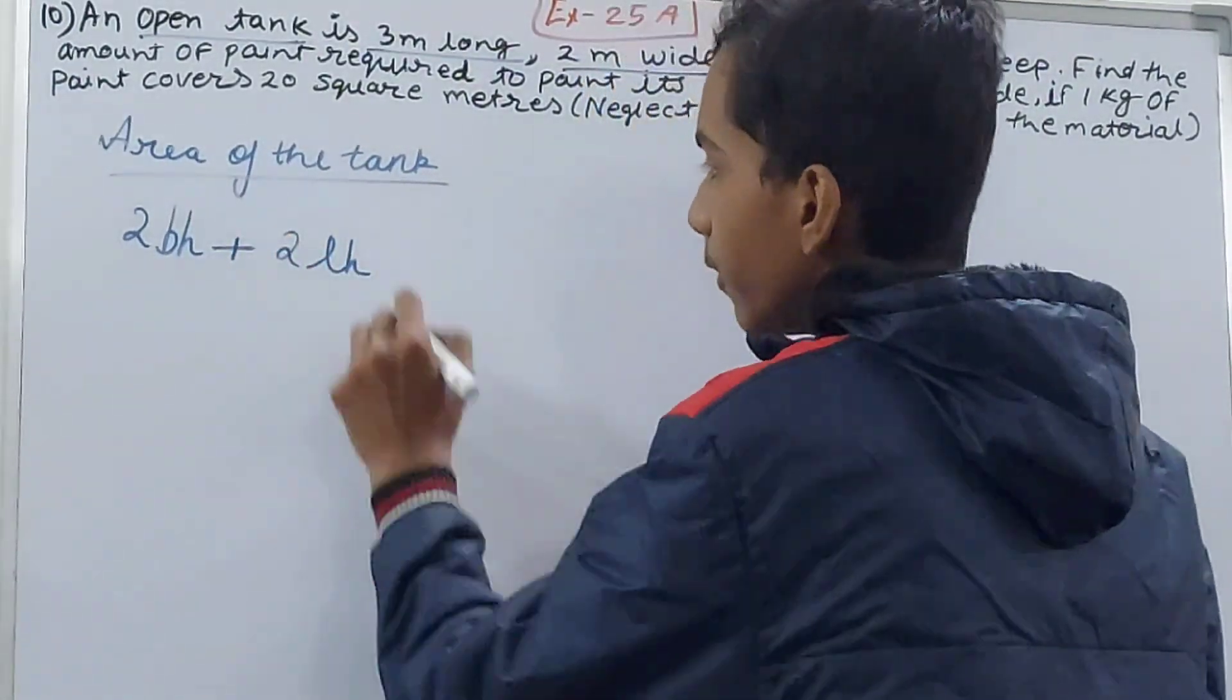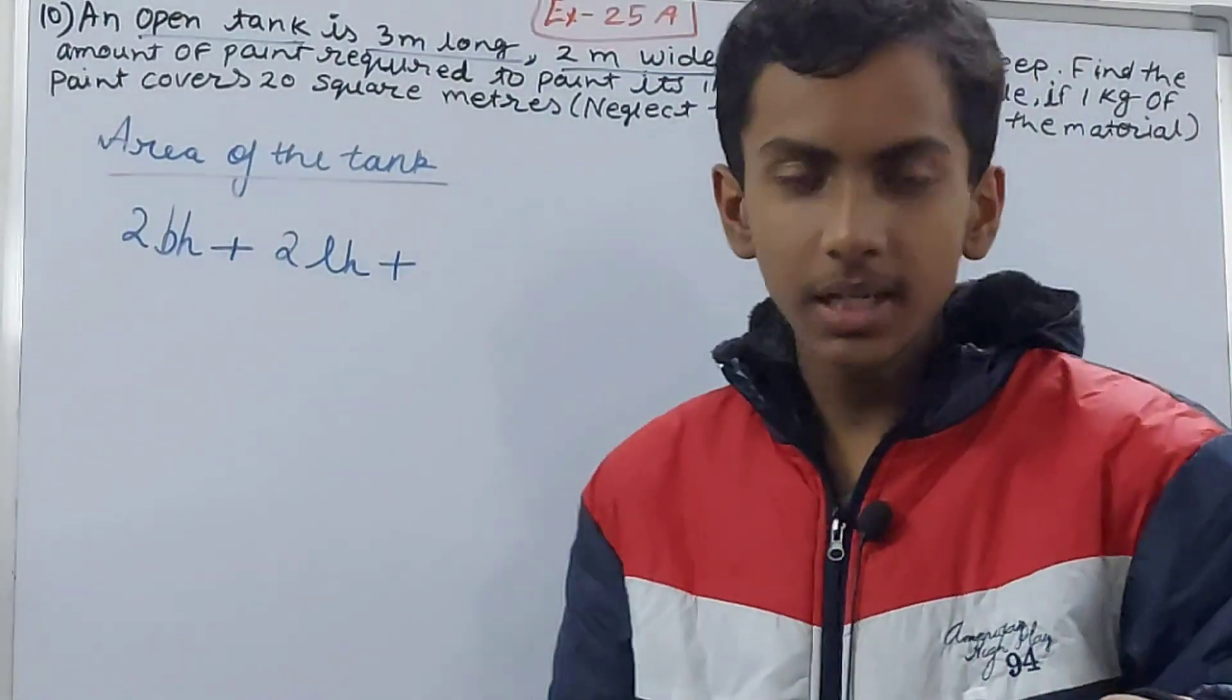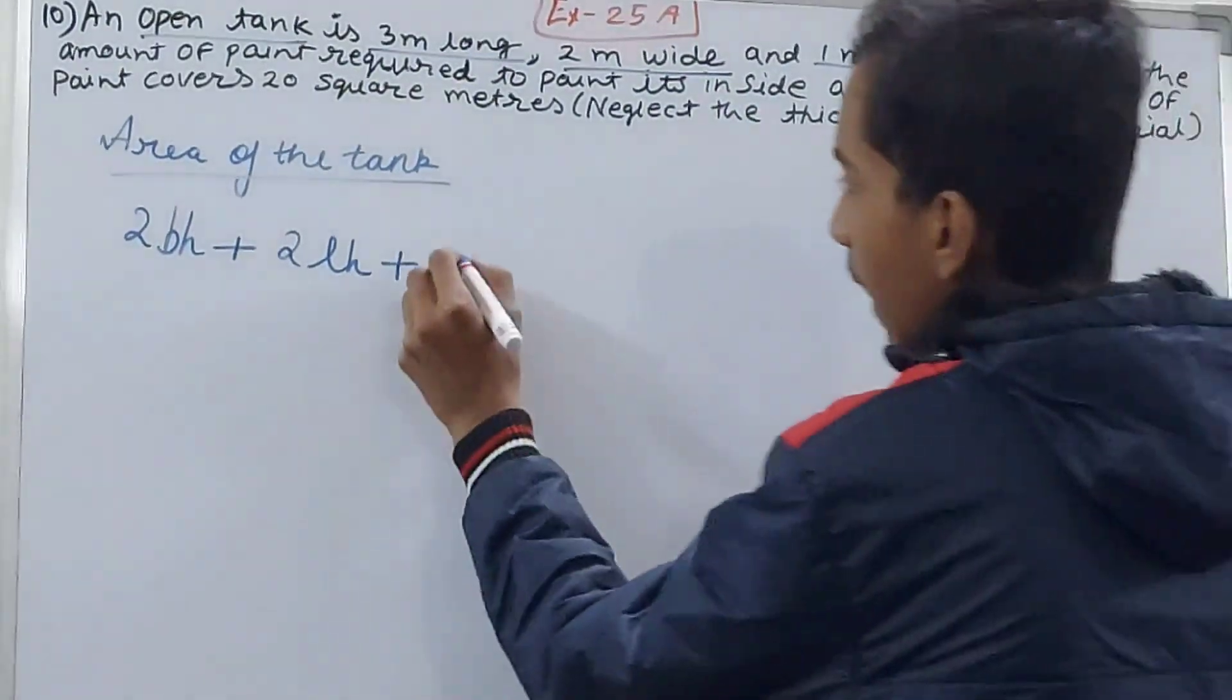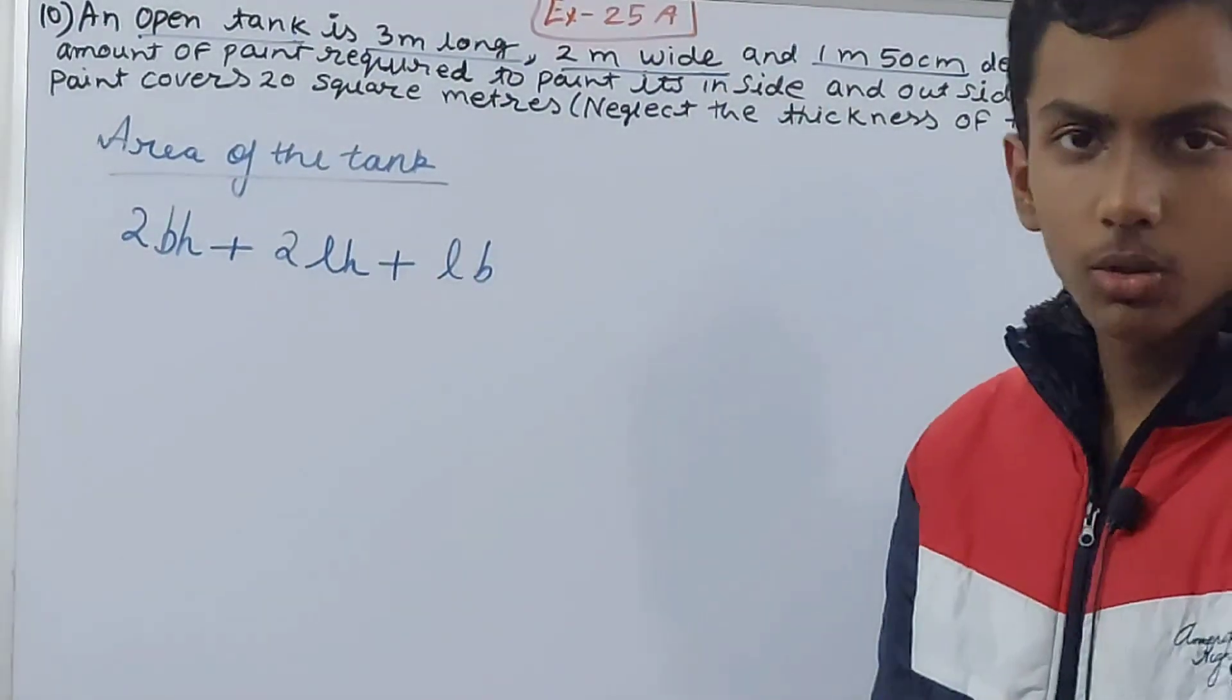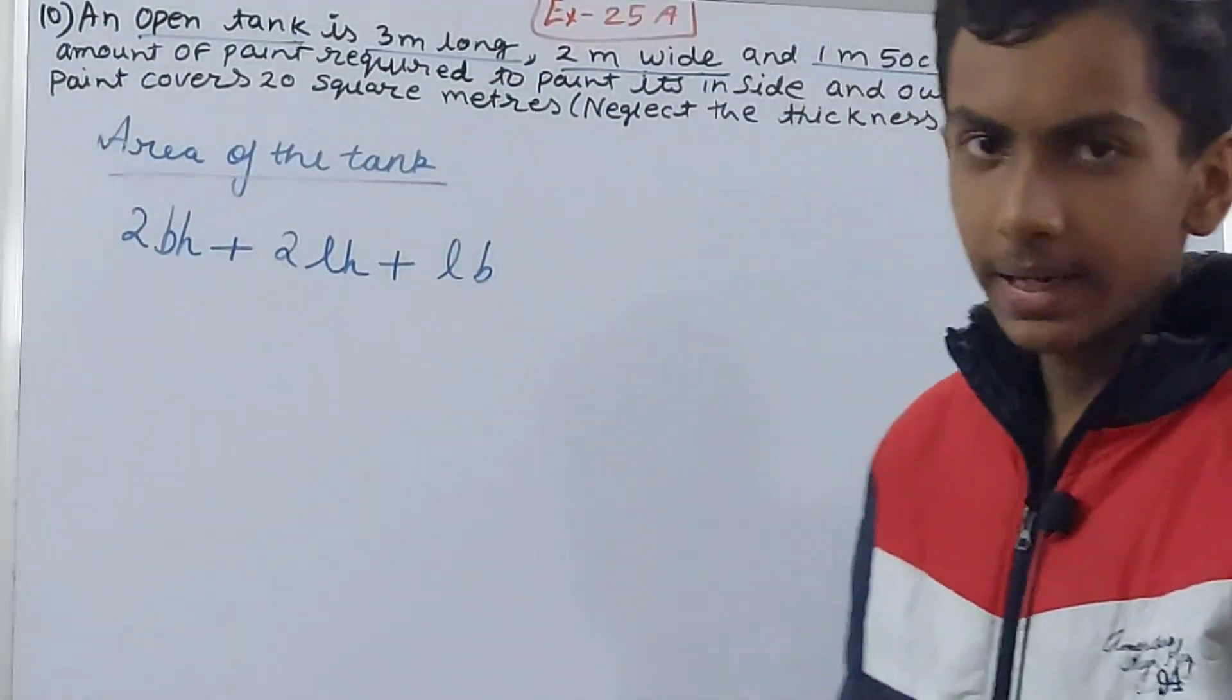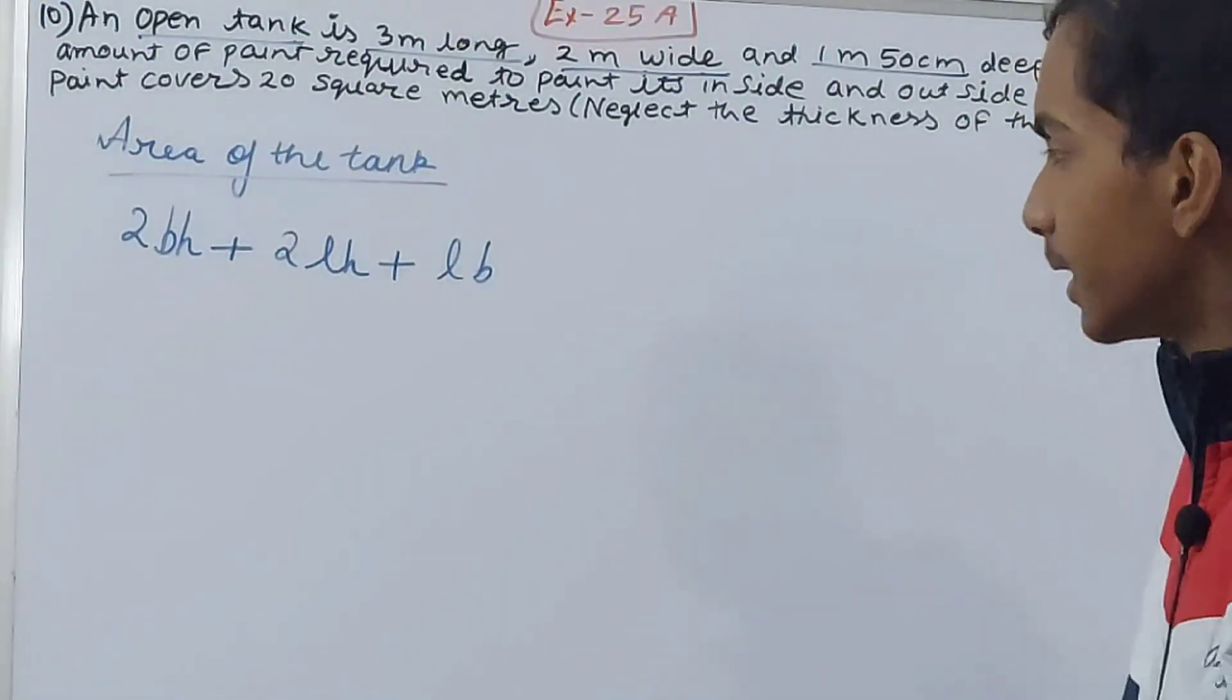And then there will be floor also that has to be painted. So for the floor what I will do: I will do length into breadth. Simple, floor is a rectangle, so nothing much, just length into breadth. And only one side is there, that's why just length into breadth.